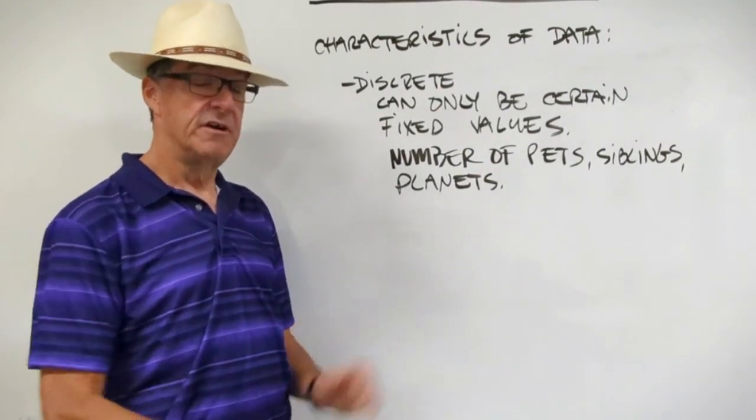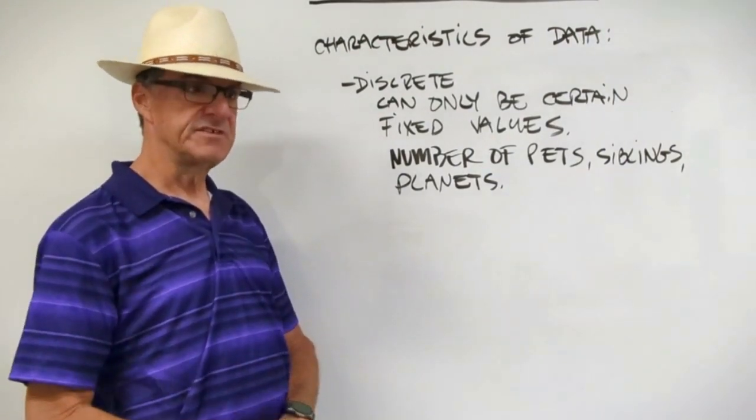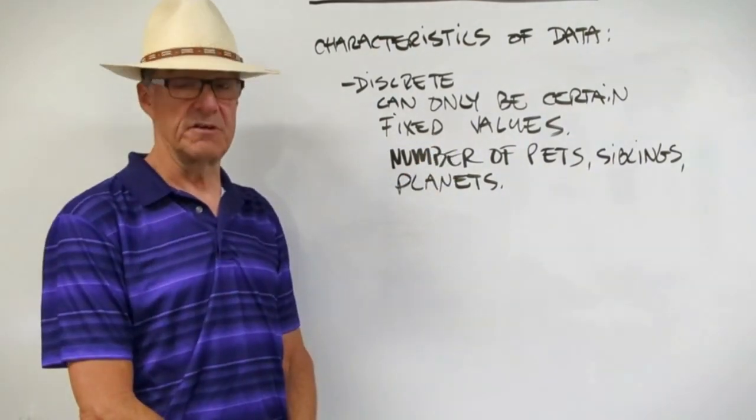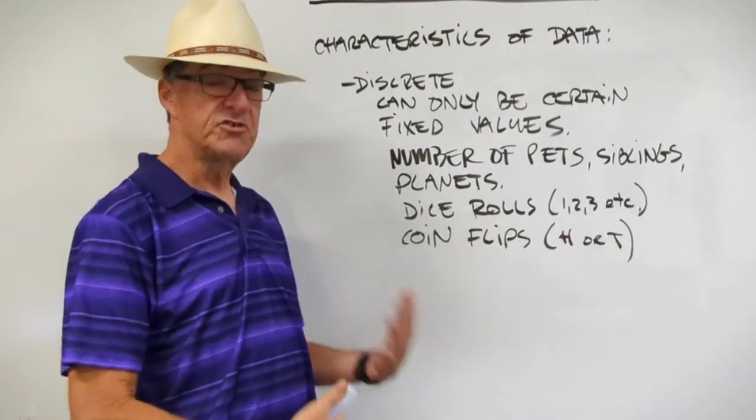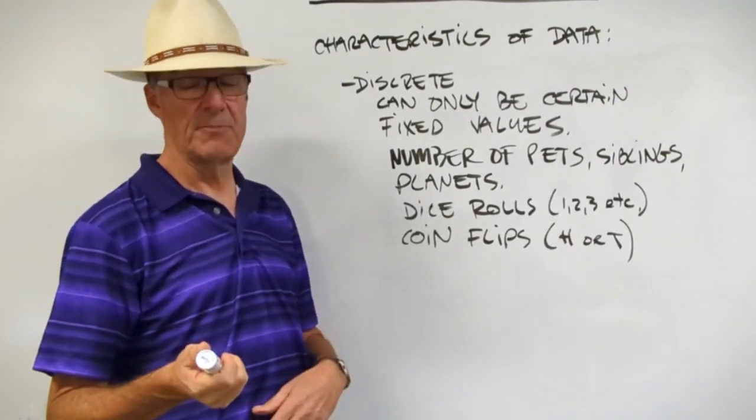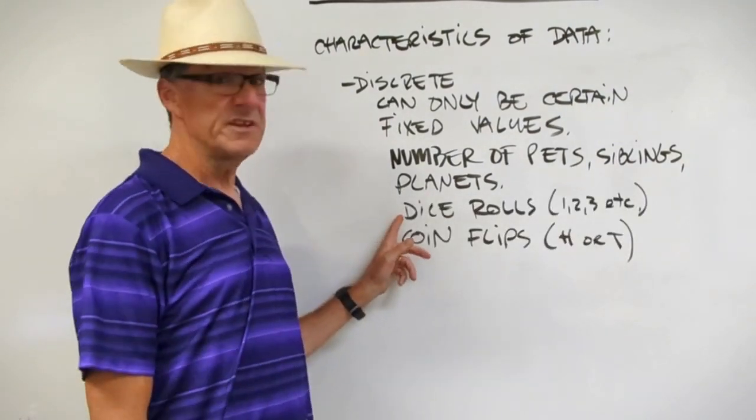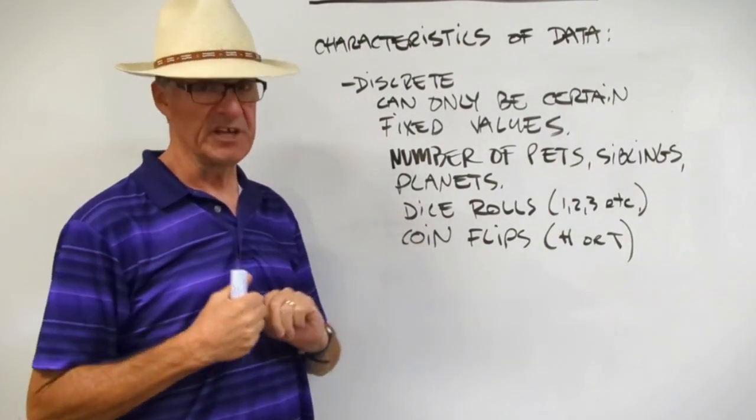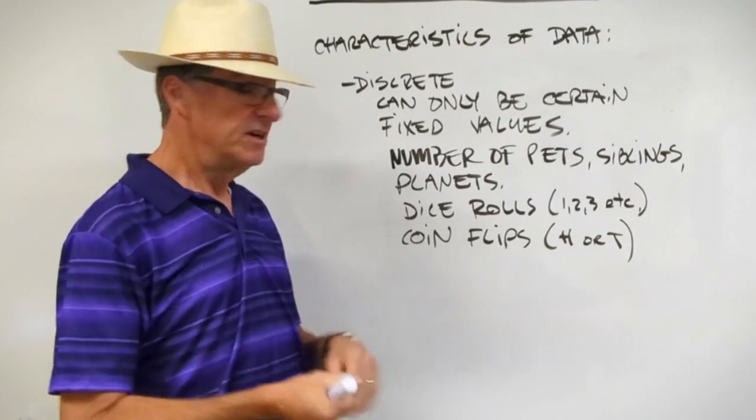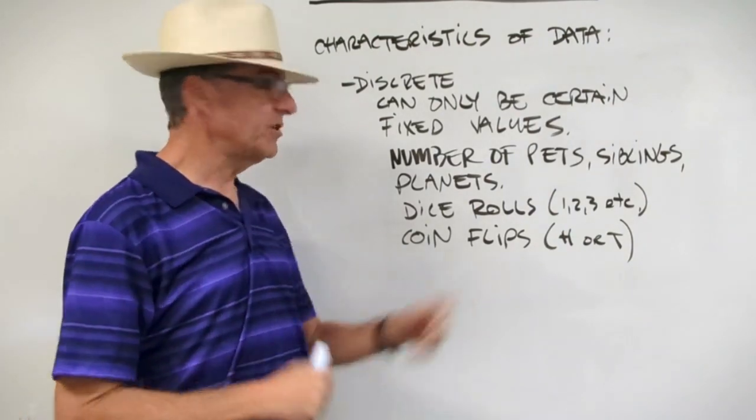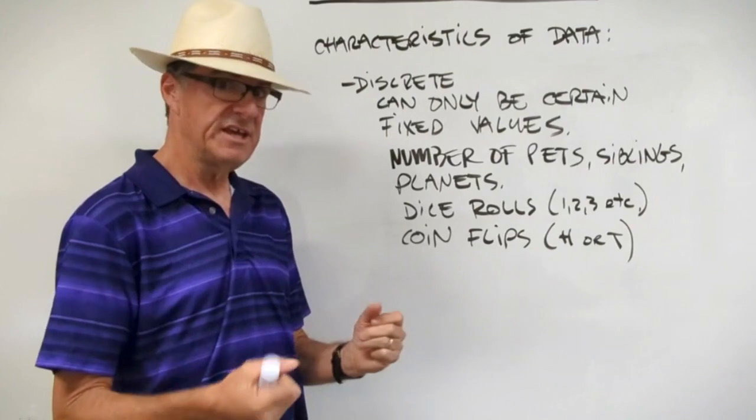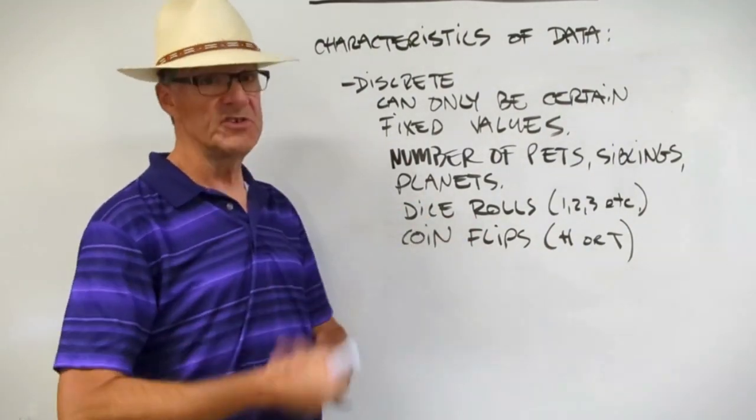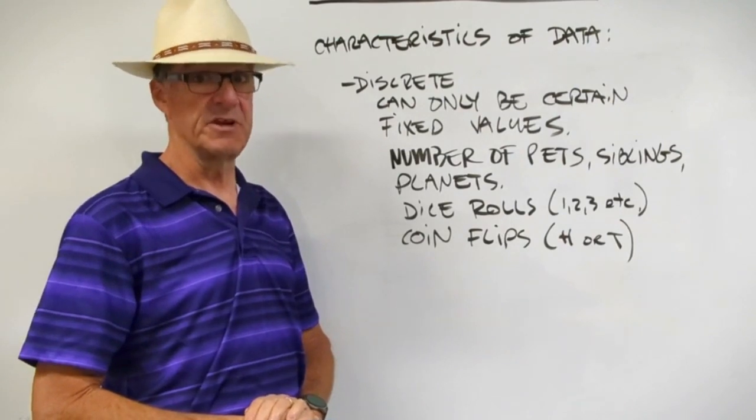Now there's another type. Think for a second if you can come up with something else that's not a number of something, but still it's discrete. It can only be a certain fixed value. Here's two more types. If we roll a die, we can only get a one, two, three, four, five, or a six. We can't roll a four and a half. So that's discrete data. Same thing with coin flips. You can only get a head or a tail. We can't get kind of halfway between the two. And there's numerous examples of other types of discrete data.